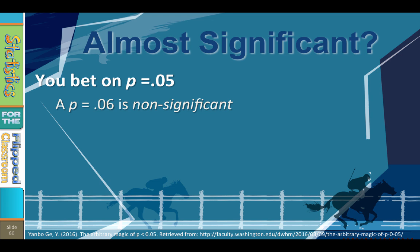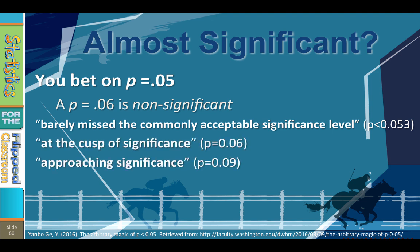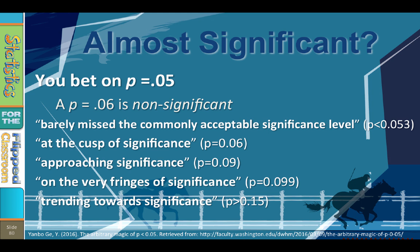In fact, here are some descriptions of findings from actual peer-reviewed journals. Barely missed the common acceptable significance level. At the cusp of significance. Approaching significance. On the very fringes of significance. Trending towards significance. There is no such thing as marginally significant.